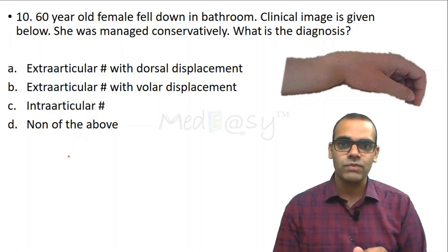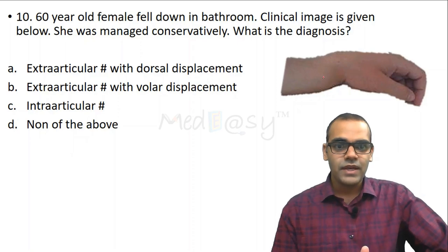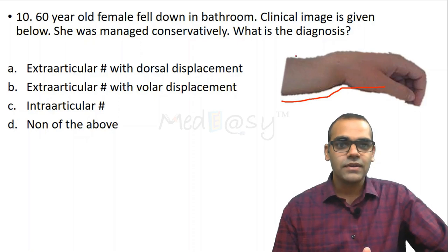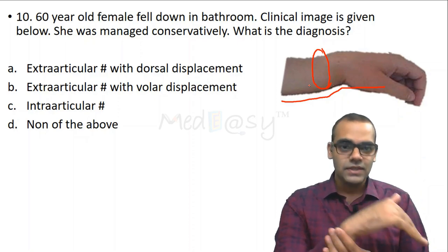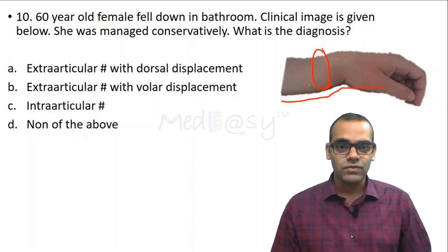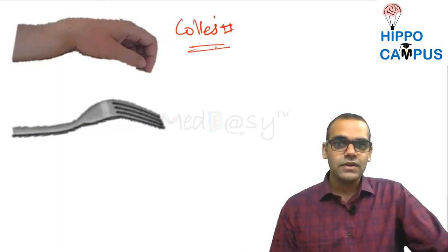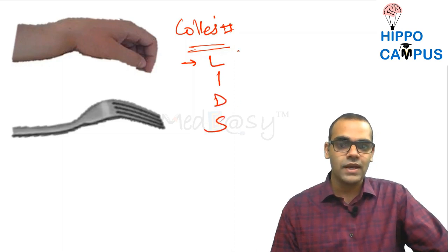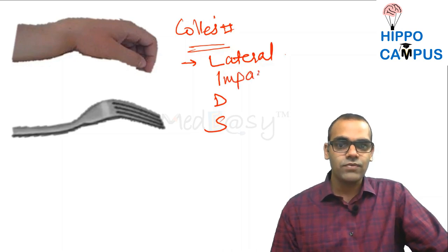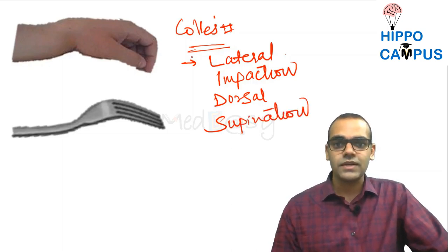Question 10: A 60-year-old female fell in the bathroom. A clinical image was given and she was managed conservatively. The image clearly shows a dinner fork deformity at the level of the distal radius, just proximal to the joint. There is dorsal displacement producing a dinner fork-shaped deformity.